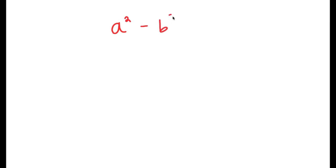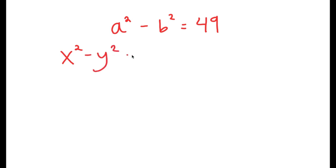In this video, I'm going to solve the equation a squared minus b squared is equal to 49. To solve this, I'm going to use the property that states that if I have something in the form x squared minus y squared, this is equal to x plus y times x minus y.